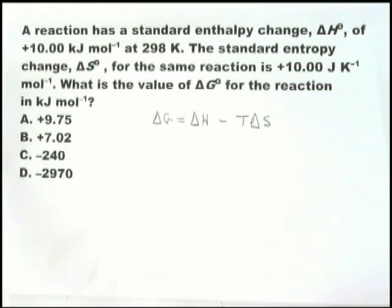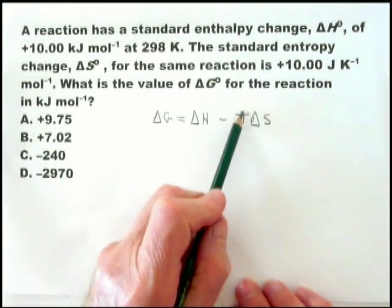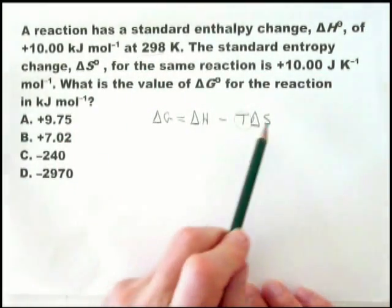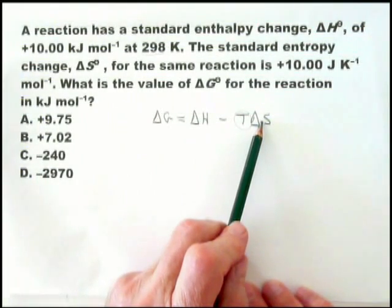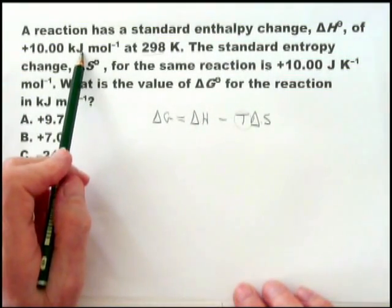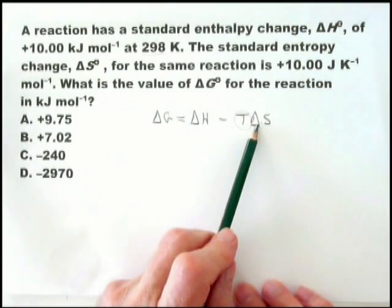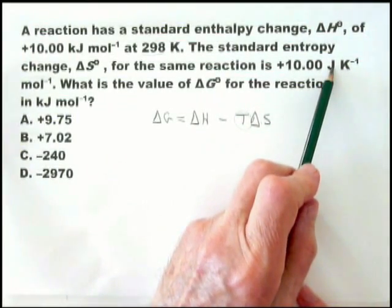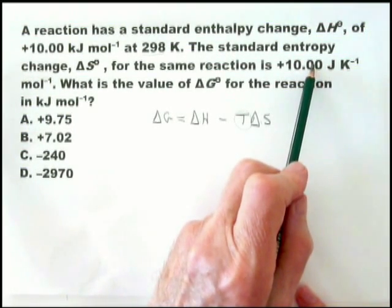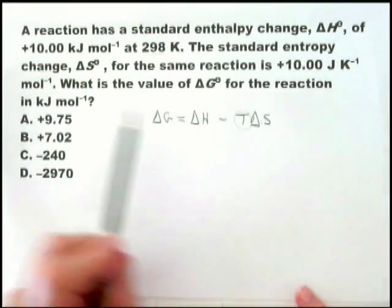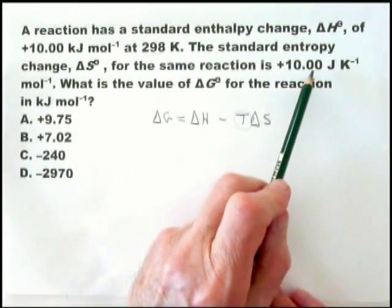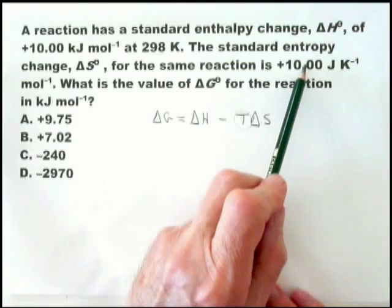There are a few things about it you have to remember. One is that T is in Kelvin. The second thing is that delta H and delta S must be in the same unit. Whereas delta H is usually given in kilojoules per mole, delta S generally is given in joules per mole per Kelvin, so that has to be changed. The delta G is usually in kilojoules as well, so it's best to change the delta S by dividing it by 1,000.